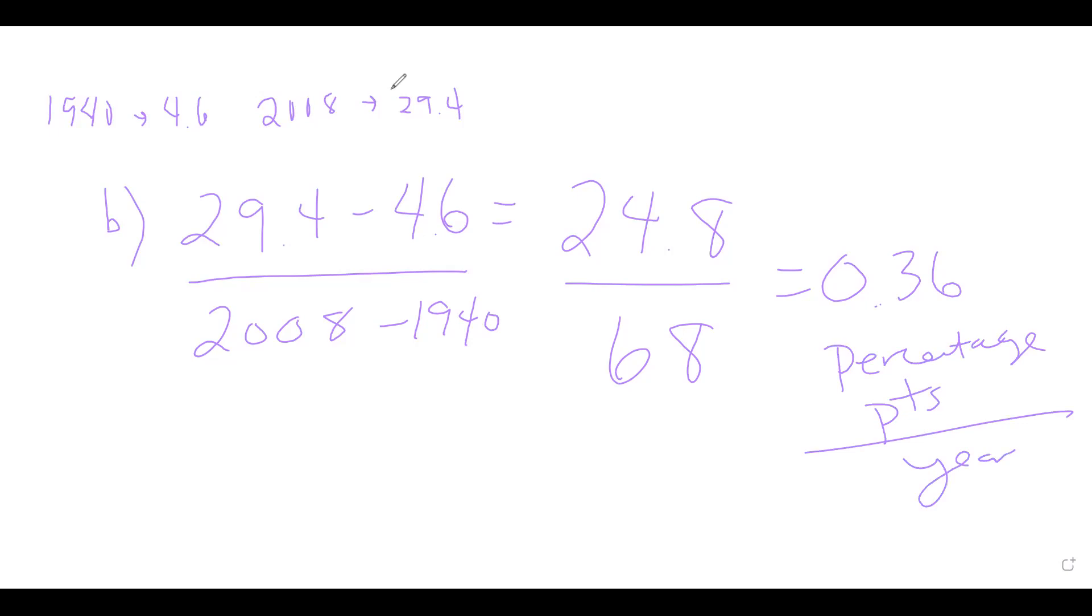So a possible topic sentence that we could say, we could say, from 1940 to 2008, the percentage of college grads has increased by 24.8 percentage points. Right? It's increased by that number. So over the course of 68 years, we've had a 24.8 percentage point increase. All right. Cool. So I'm going to clear this. Let's stop sharing with the whiteboard. Let's go back to our book.